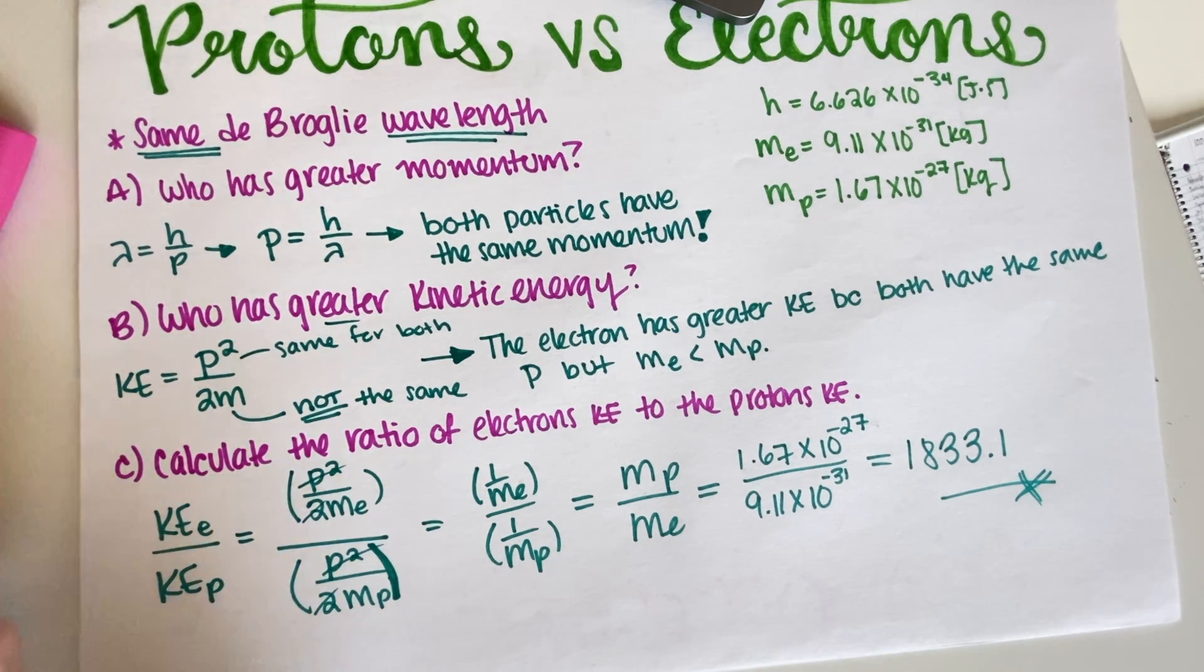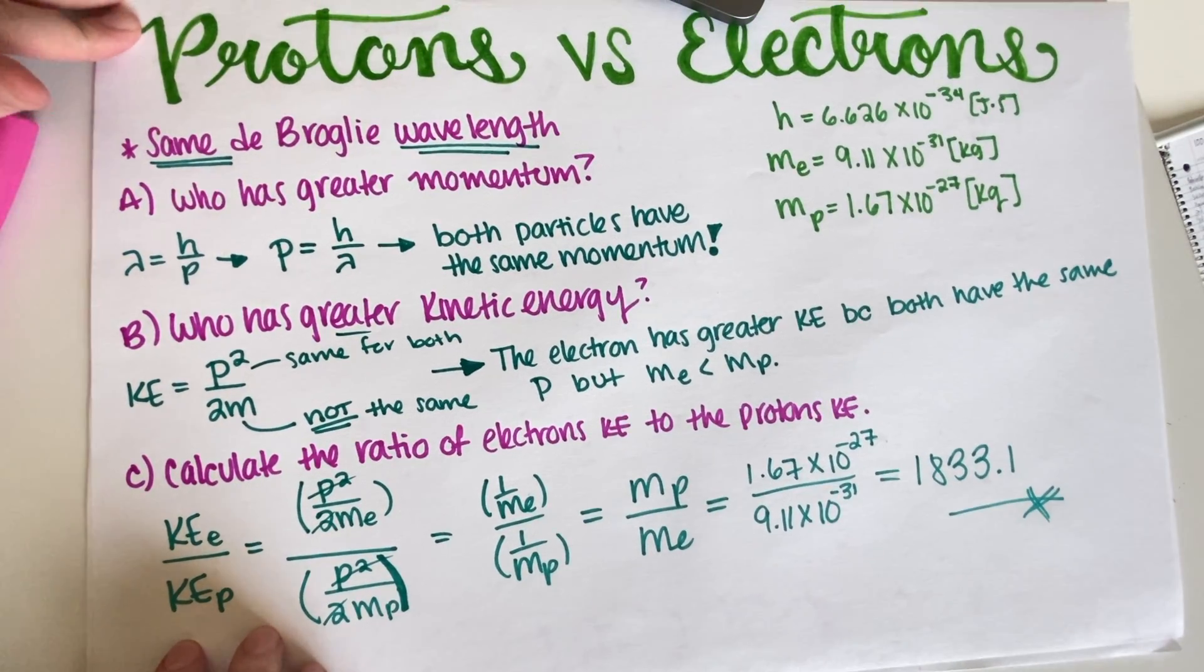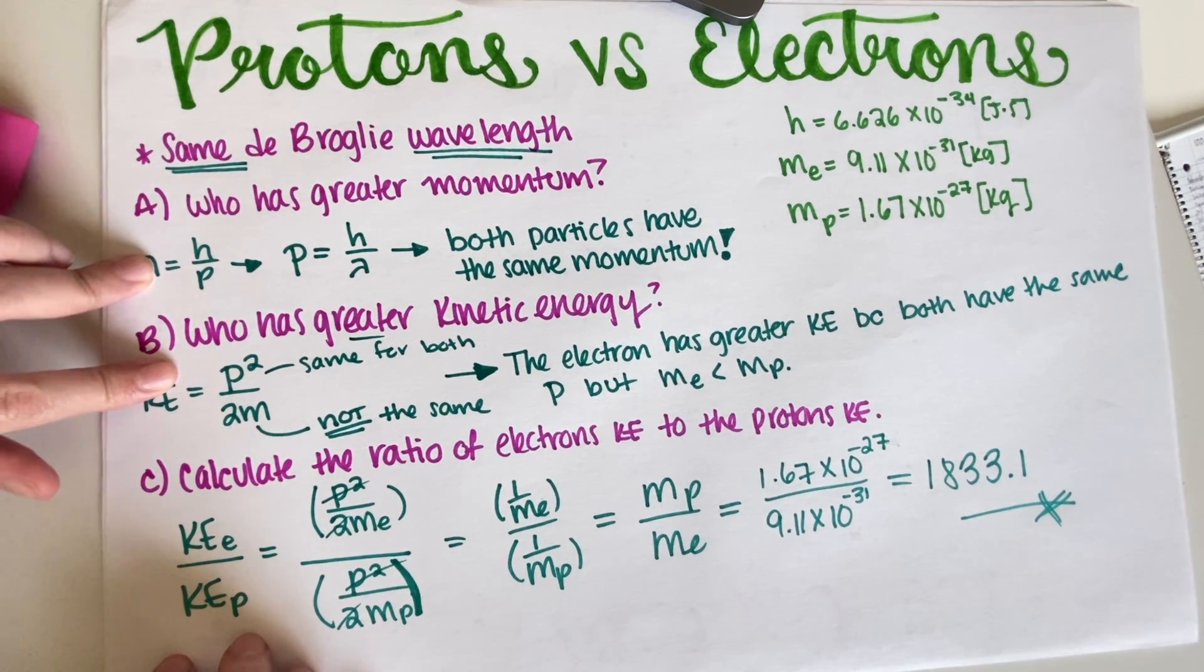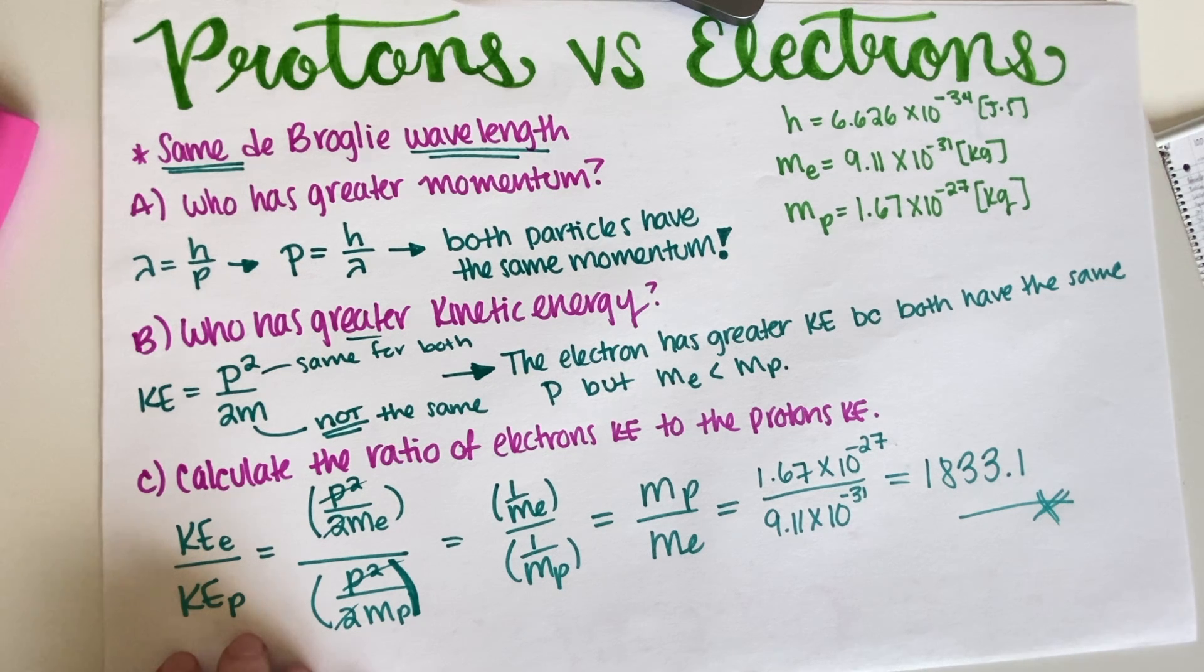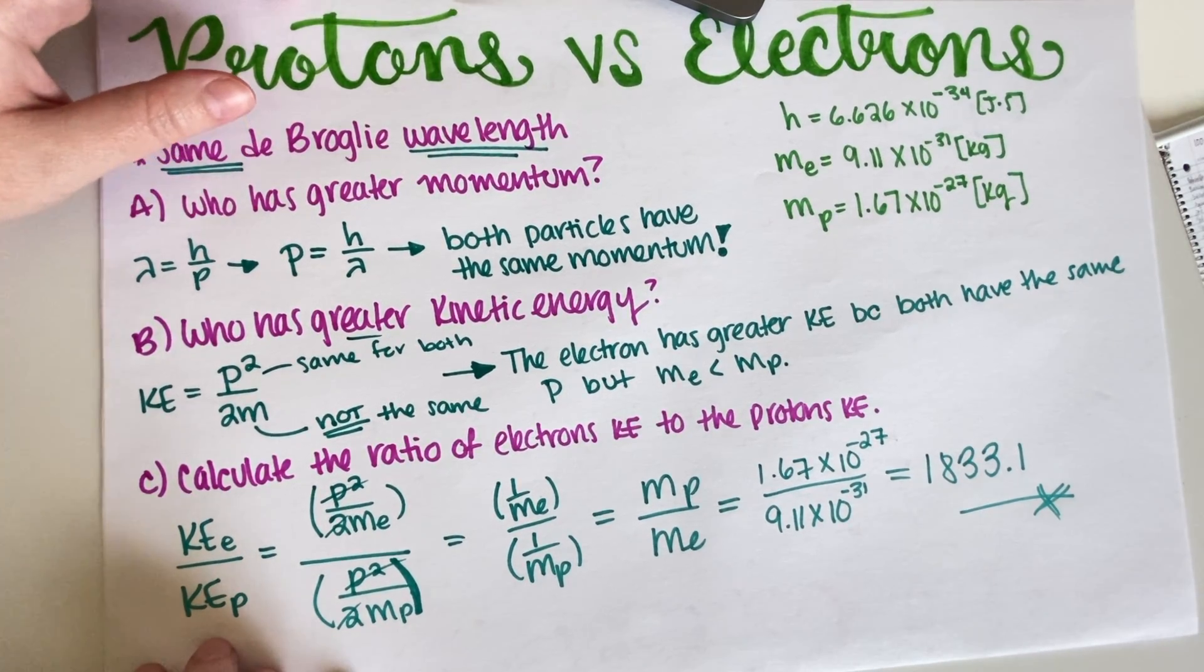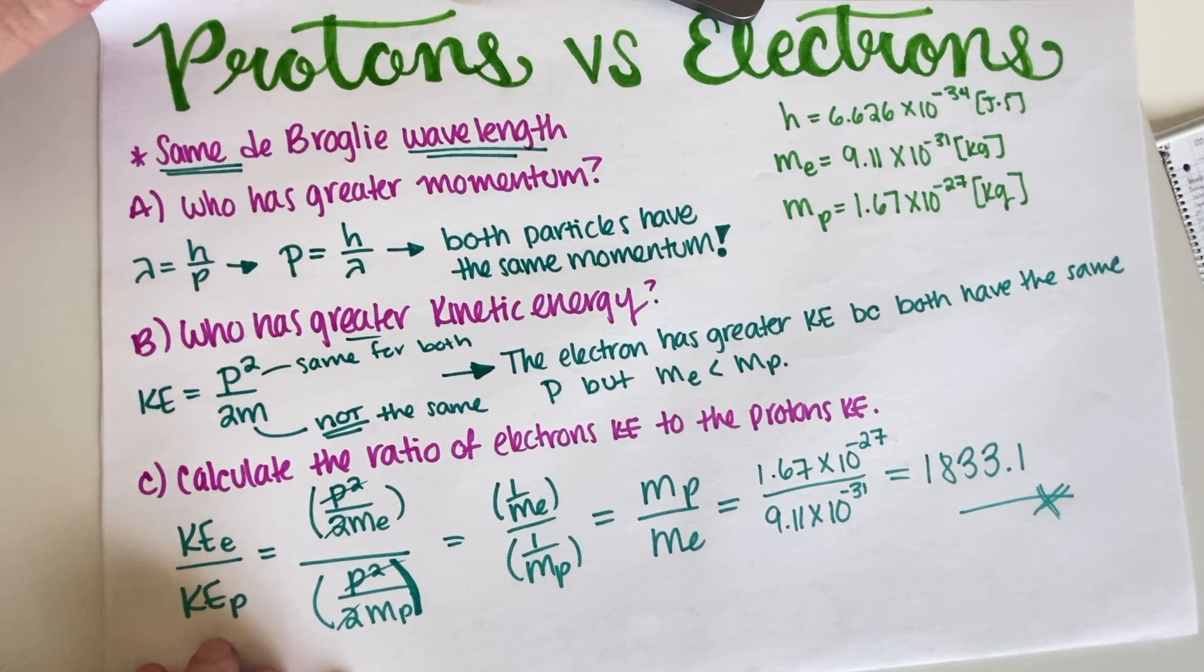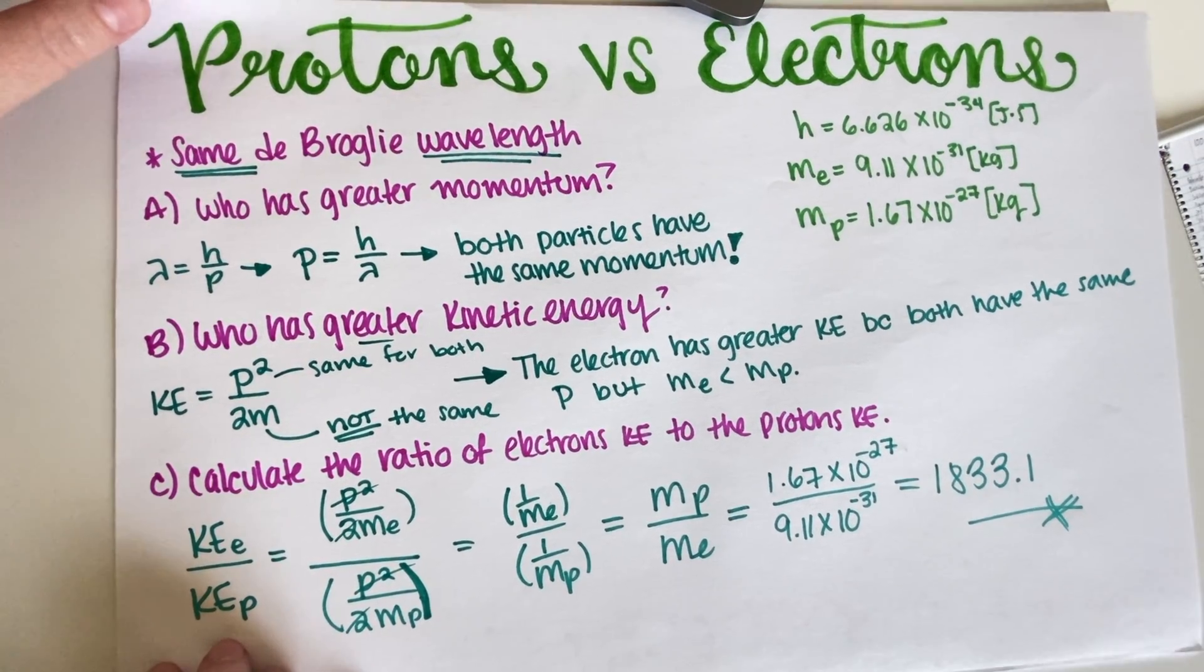So this is the end of the problem. This was a little bit of a conceptual problem to see if you can apply your definitions from physics. A lot of people remember their mv equation, so based on that a lot of people might jump and say that the proton has more momentum, but that is only assuming that they have the same velocity, which in this case they don't. They have the same wavelength.